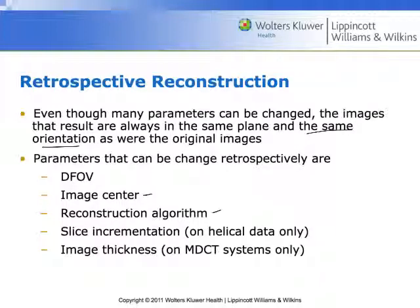We can change the slice incrementation only if we're using a helical or volumetric data set. If it was acquired axially, we will not be able to change the slice increment, or we will get a stair-step kind of artifact. We can also change the image thickness if we're using a multi-detector CT system. Very often we'll want to use a thin slice for scanning and then reconstruct thicker slices for viewing, because then in storing those images it's going to be more easy to manage those files, and we will maintain spatial resolution.